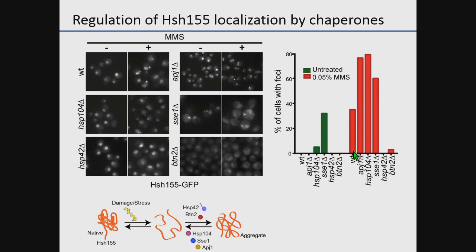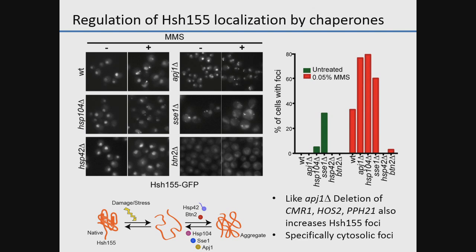APJ1 is a chaperone and INK marker that also promotes dissolution or prevention of these aggregates. Similarly, deletion of any of the markers from the high-throughput screen — CMR1, HOS2, PPH21 — all lead to increases, specifically increasing localization of the splicing factor in cytoplasmic foci, suggesting some sort of triage between nuclear and cytoplasmic quality control sites.